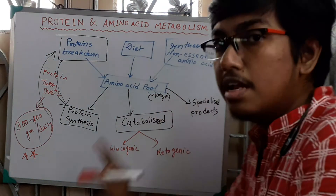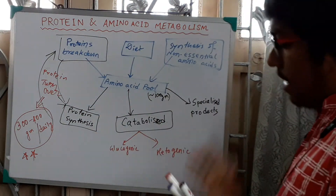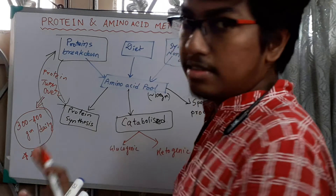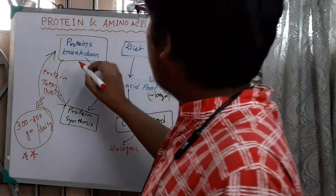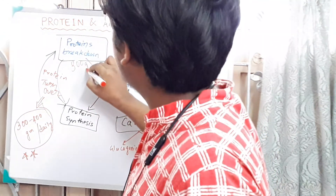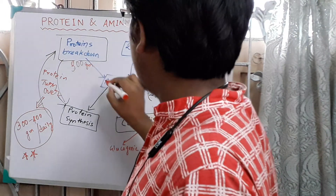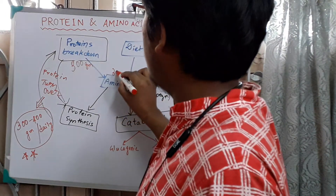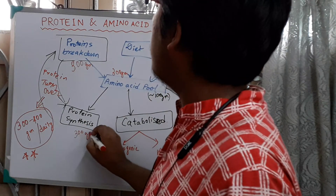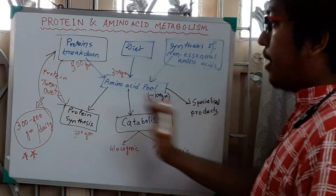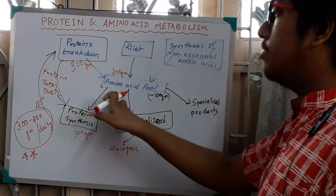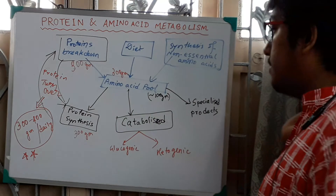Let me clear your concept with an example — these are not exact values, just to illustrate. If 300 grams of protein breaks down, then 300 grams of amino acids are generated and again 300 grams of new protein is synthesized. So there is a continuous turnover — 300 grams protein breakdown to 300 grams amino acids to 300 grams new protein synthesis. This is the continuous dynamic equilibrium.